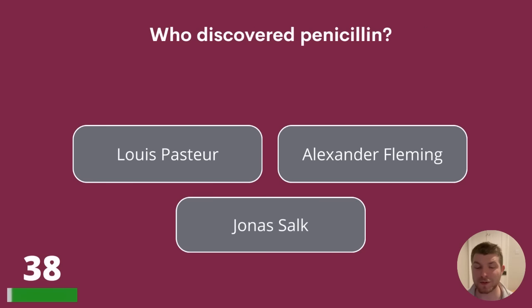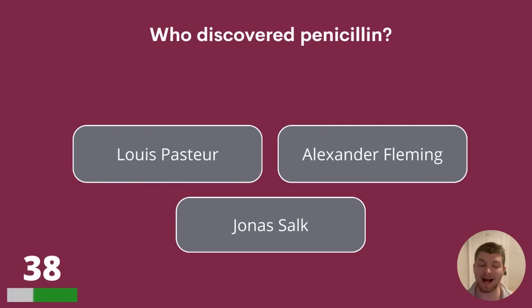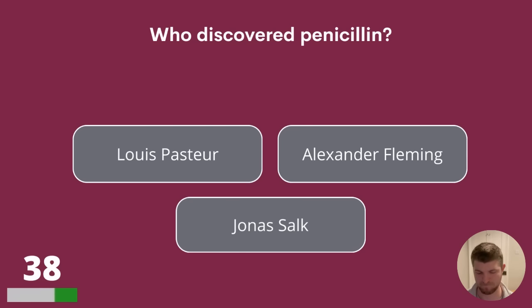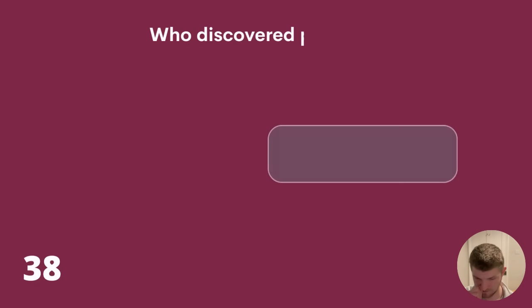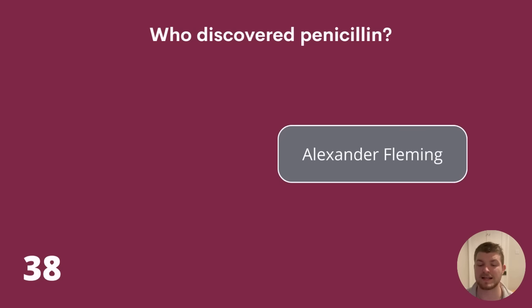Question 38. Who discovered penicillin? Louis Pasteur, Alexander Fleming or Jonas Salk? The answer is Alexander Fleming.